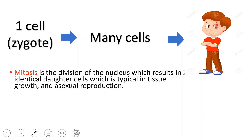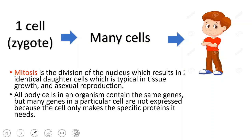This boy has trillions of cells with the same DNA and same genetic material, yet he has different structures — ears, hair, eyes — that differ in structure. This is because not all genes in the DNA are expressed. In eye cells, certain genes are expressed making proteins, while others are not; in hair cells, different genes are expressed. So all body cells contain the same genes, but many genes in a particular cell are not expressed because the cell only makes the specific proteins it needs.